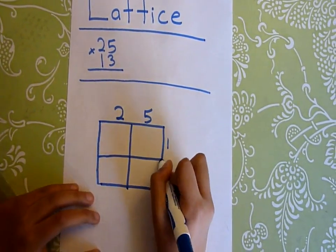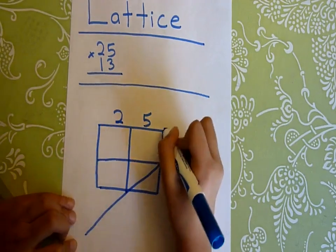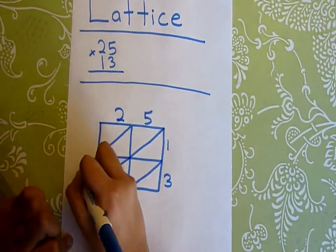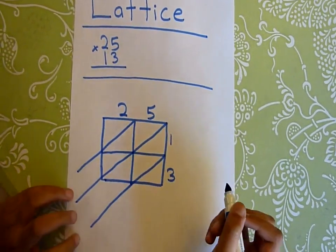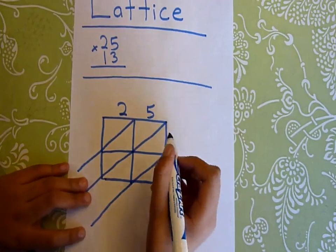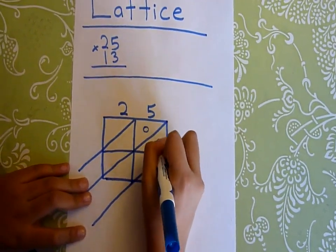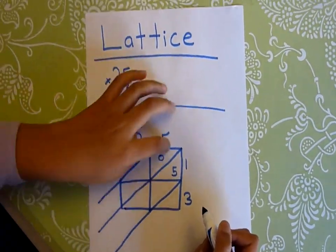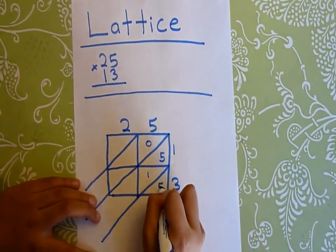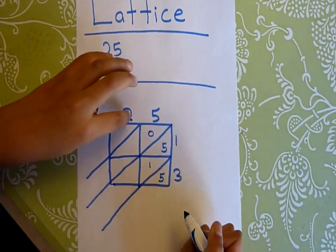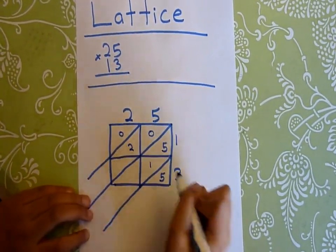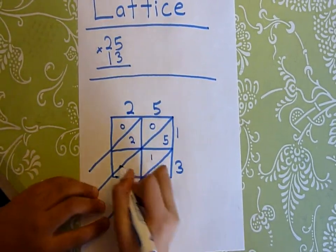First you do five times one, that's five, so you put zero right here and five. We do five times three, that's 15, so one and then five. Then we do two times one, that's two, and then you do three times two, that's six.